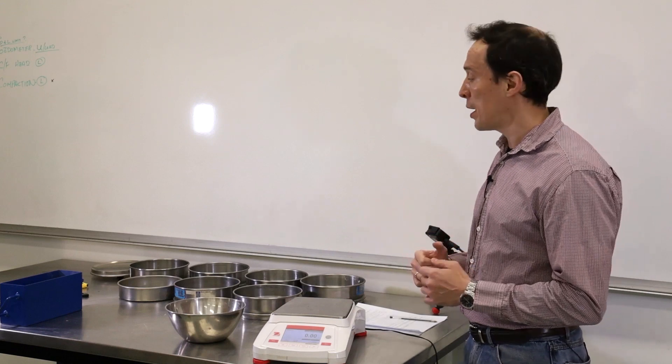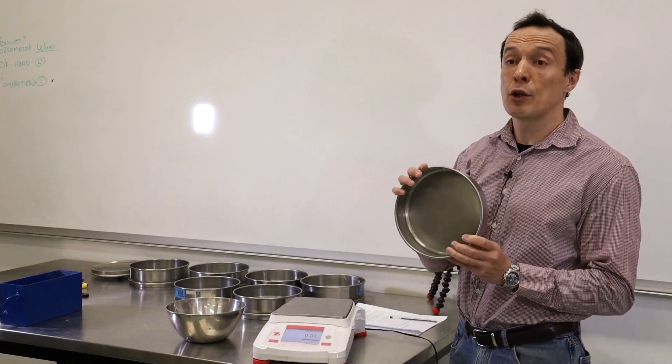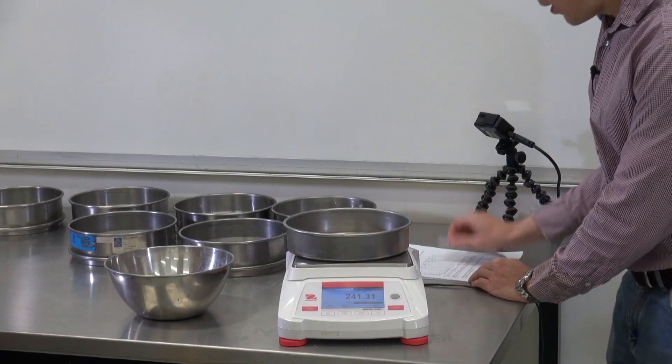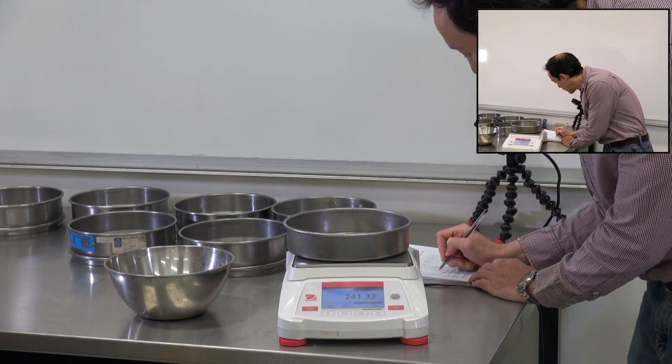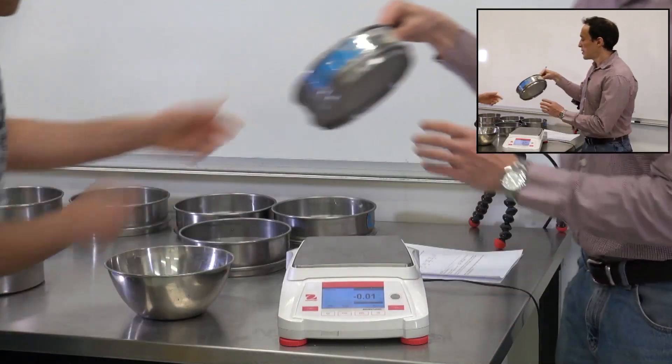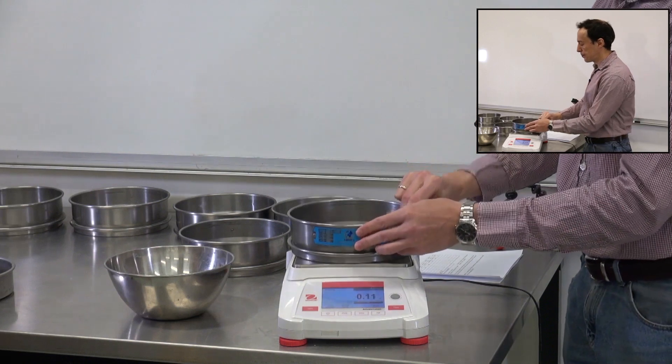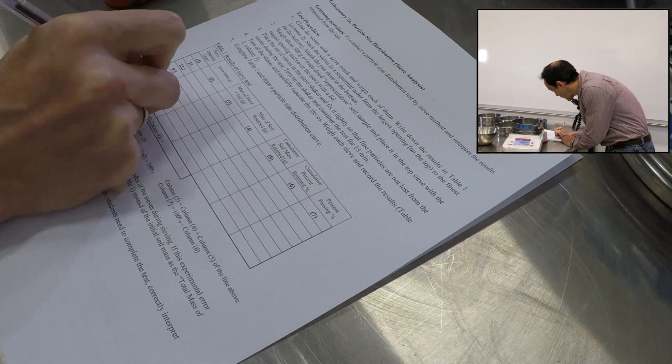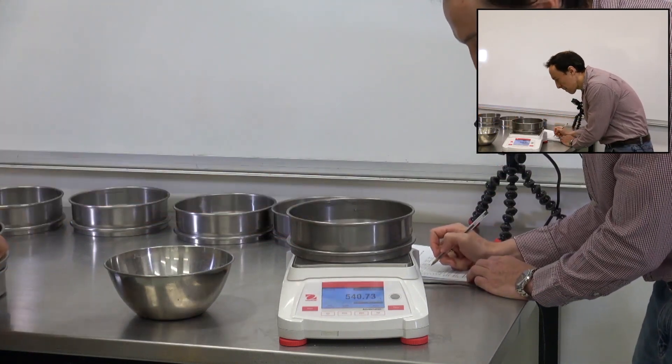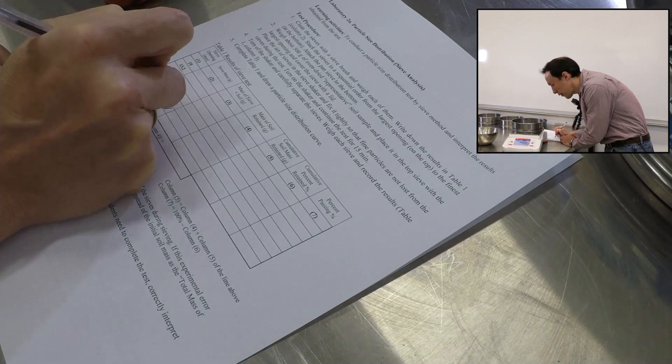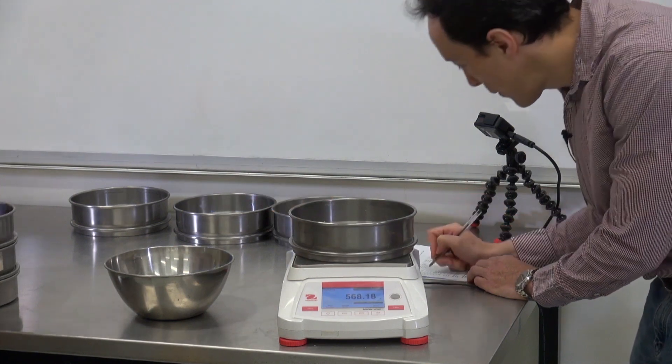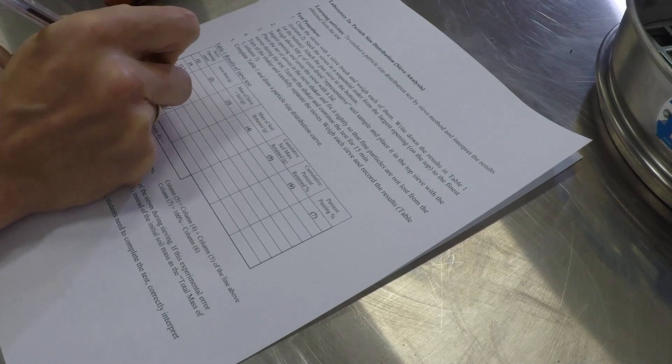So first we will measure the mass and we'll start with the pan. So it has no sieves. This pan is to collect finer particles of the soil. I'll put it on the scale and I'm going to write down the mass which is 241.32. So next sieve is 1.18 millimeters. It's 504.61. Next one is 2.36 millimeters. The mass of it is 540.51 grams.